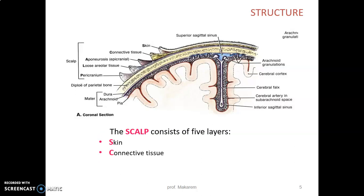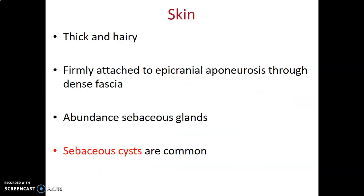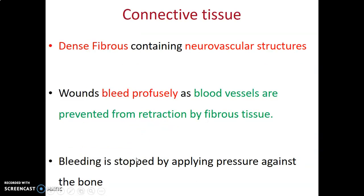The skin is thick and hairy — there is hair on the scalp — and it is firmly attached to the epicranial aponeurosis through dense fascia. The skin has abundant sebaceous glands, which is important because you are likely to get sebaceous cysts in this region.